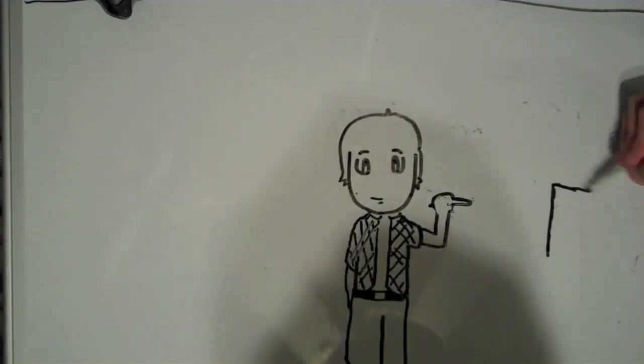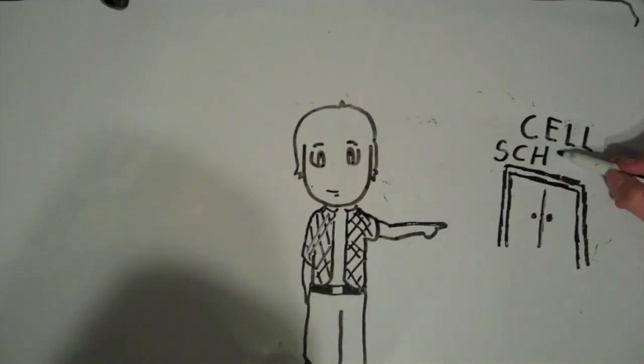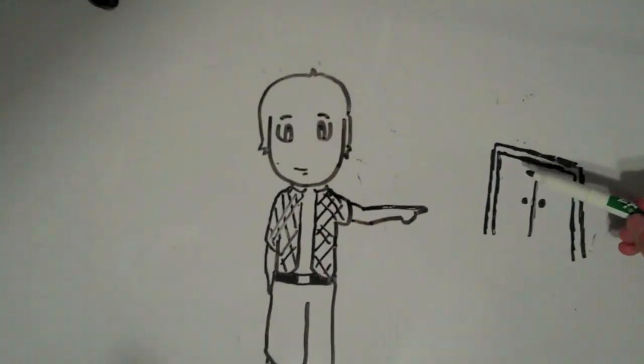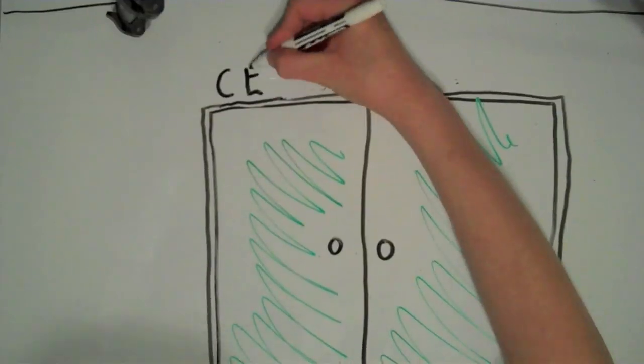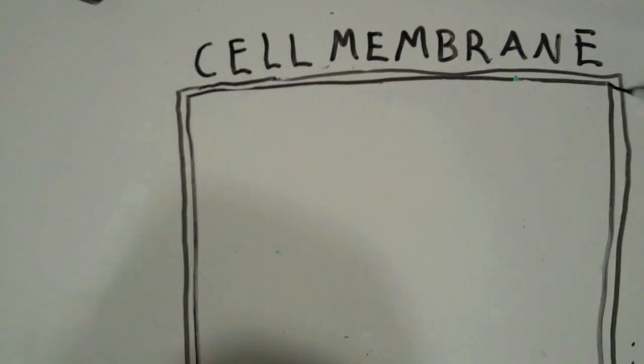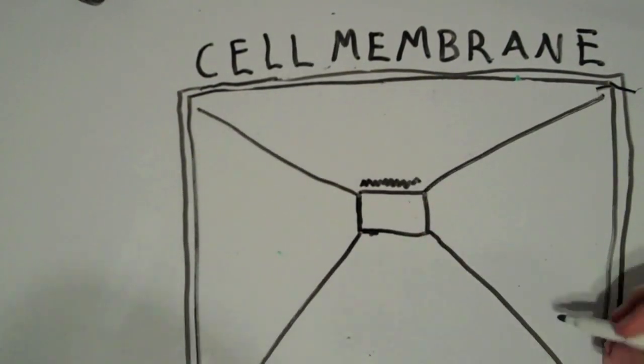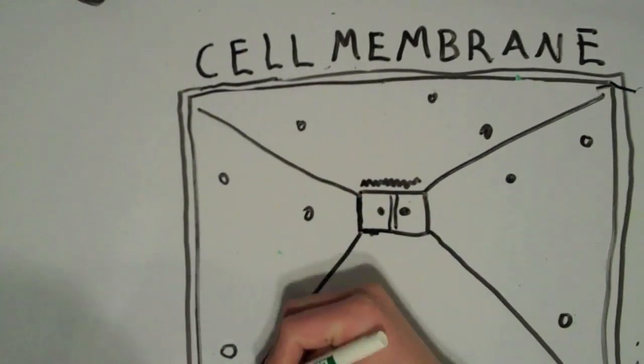Now we're going into the cell school and looking at some of its parts. First, see those doors right there? They're a lot like a cell's membrane since they let things in and out of the cell, like how doors let students and teachers in and out of the school.